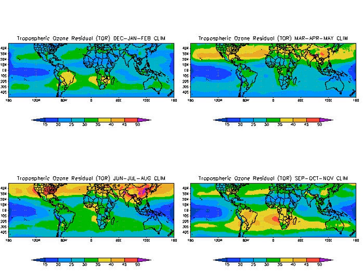LIDAR is a common ground-based remote sensing technique to measure ozone. TOLNET is the network of ozone observing LIDARs across the United States. Ozonesondes are a form of in-situ, or local, measurements. An ozonesonde is an ozone measuring instrument attached to a meteorological balloon, so that the instrument can directly measure ozone concentration at varying altitudes along the balloon's upward path.